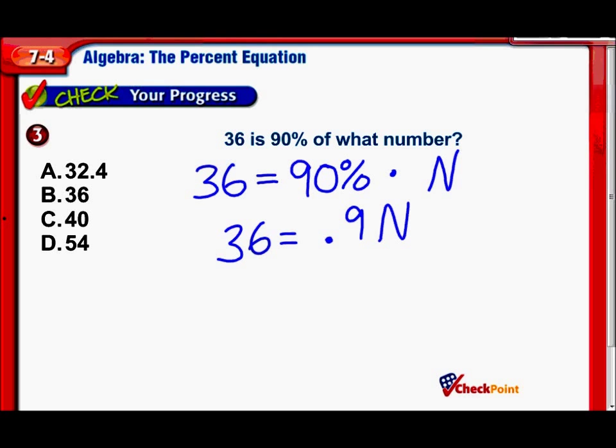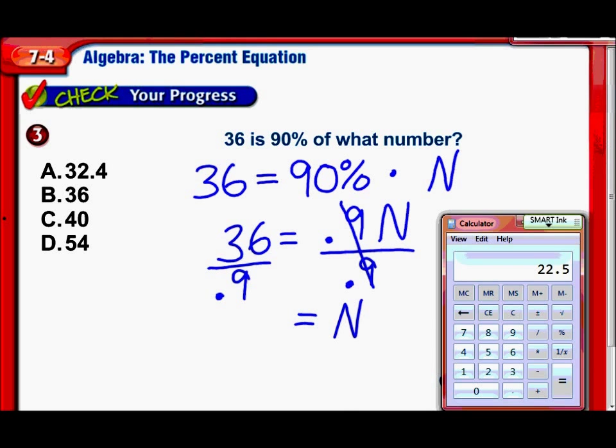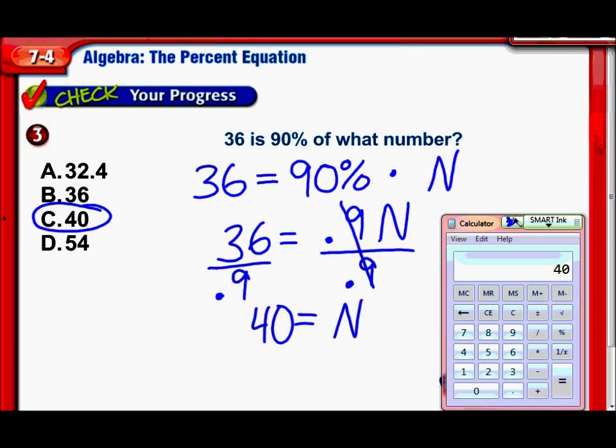Well, the opposite of multiplying by 0.9 would be dividing by 0.9. Obviously, those are going to cancel out. They equal 1. So we have n equals, time for the calculator. So I've got 36, I'm going to divide that by 0.9. And we get 40. And that seems, oh, there we go, answer choice C. Great.